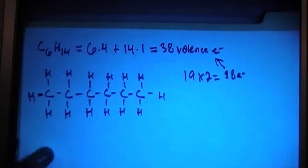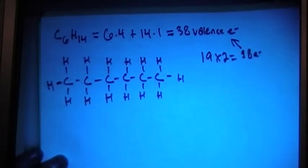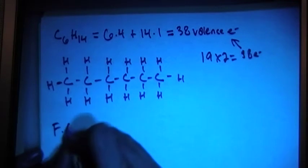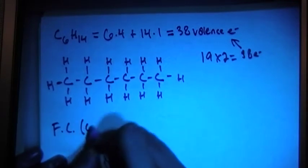19 bonds times 2 electrons for each is going to be 38 electrons, which is what we have here. So that's exactly what we're looking for.